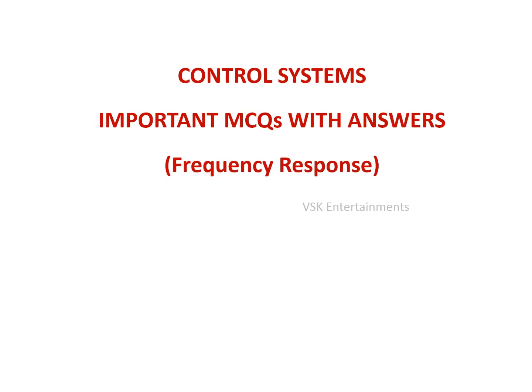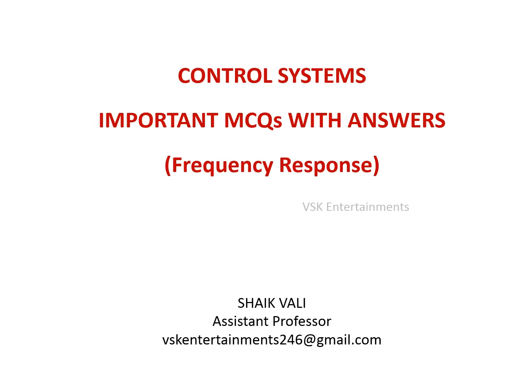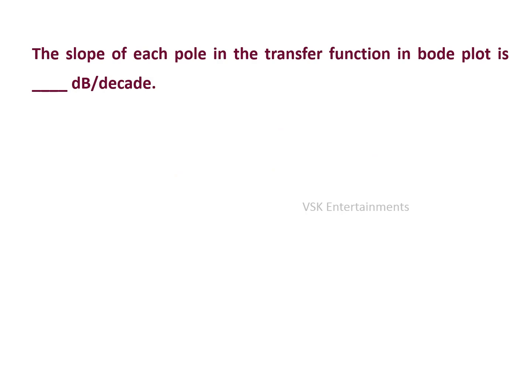Welcome to the control system lecture series. In this lecture we are going to concentrate on some MCQs on frequency response. The first question: the slope of each pole in the transfer function in Bode plot is dash decibels per decade. Options are: 20, minus 20, 0, and 40.